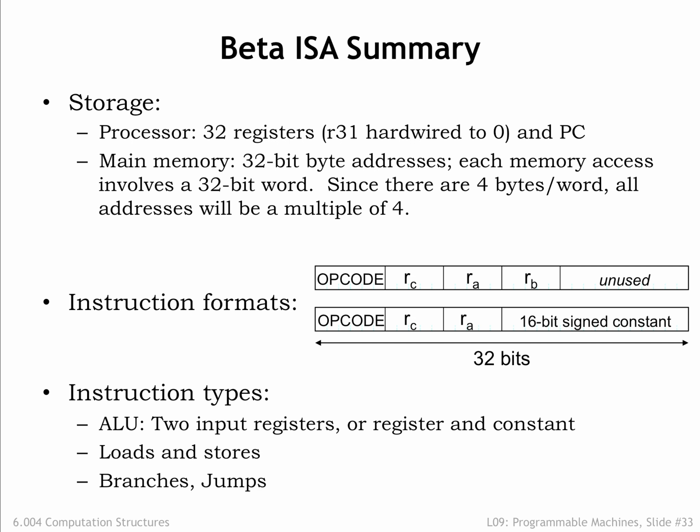That wraps up the design of the beta instruction set architecture. In summary, the beta has 32 registers to hold values that can be used as operands for the ALU. All other values, along with the binary representation of the program itself, are stored in main memory. The beta supports 32-bit memory addresses and can access values in 2^32 or 4GB of main memory. All beta memory accesses refer to 32-bit words, so all addresses must be a multiple of 4 since there are 4 bytes per word.